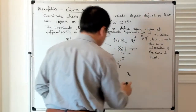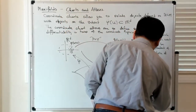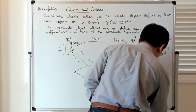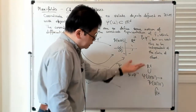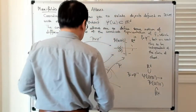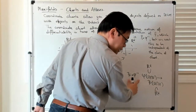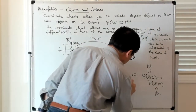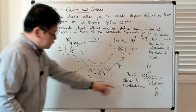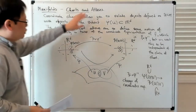So psi composed with phi inverse is a map from phi(U ∩ V) to psi(U ∩ V), and both of these are open subsets of R^d. So in some sense it's a map from R^d to R^d and you can talk about how differentiable that map is. This is some notion of compatibility — it goes into the properties of this change of coordinates map, which relates to the structure of the atlas you impose on the manifold.